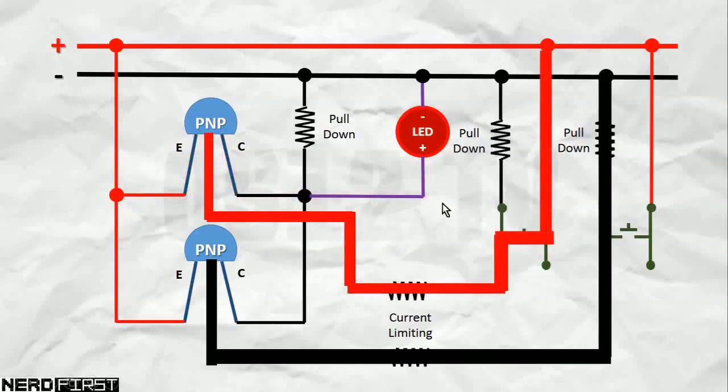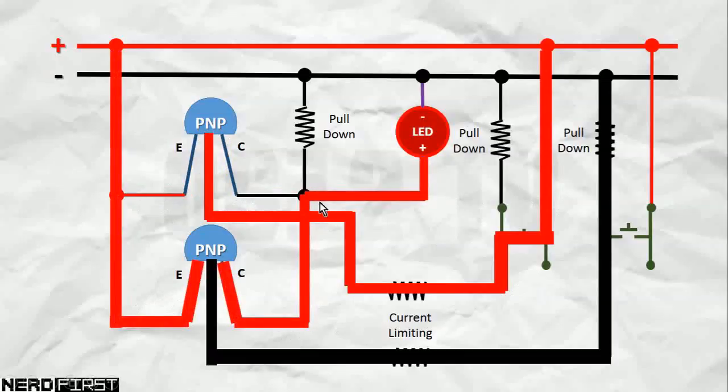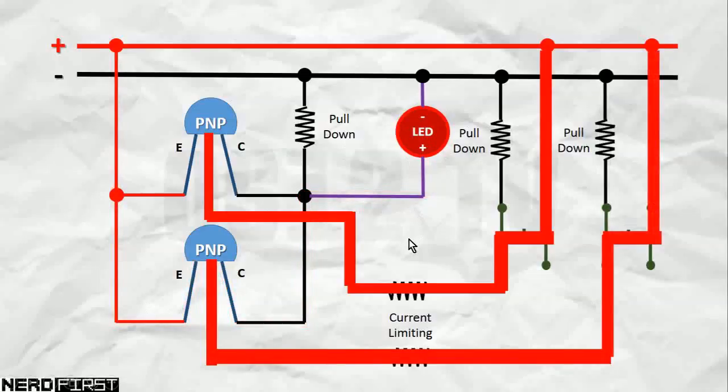Once again, pressing down on one switch isn't enough, because while this path is now blocked, the other path is still open. Your high state can still flow through to light up your LED. Both switches need to be depressed to fully break this connection. The positive terminal of our LED is now pulled down low, switching it off. Let's go ahead and take a look at our breadboard setup.